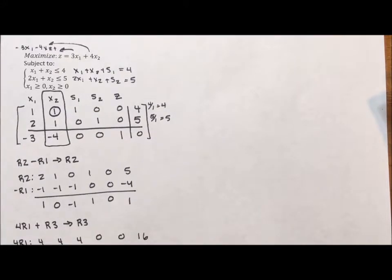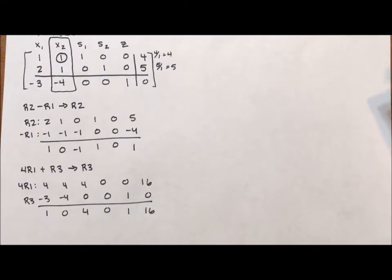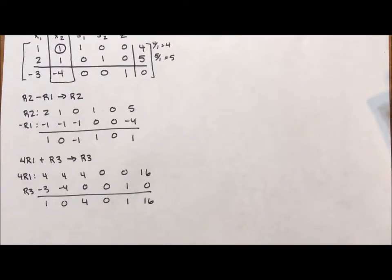So if we put this all together, the first row didn't change. So when I rewrite my first row, I'm going to rewrite the exact same first row. So the 1, 1, 1, 0, 0, 4.